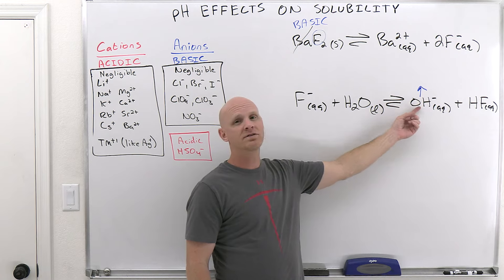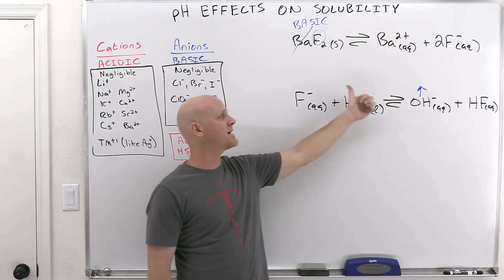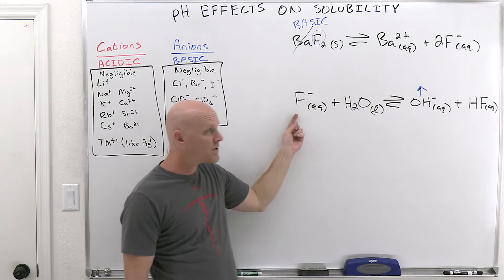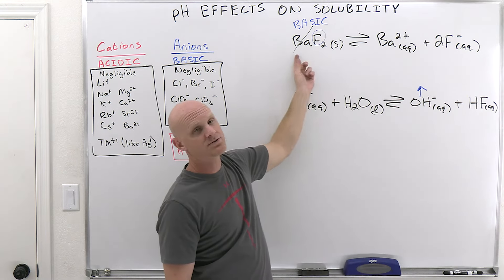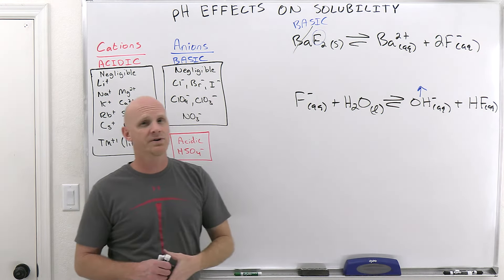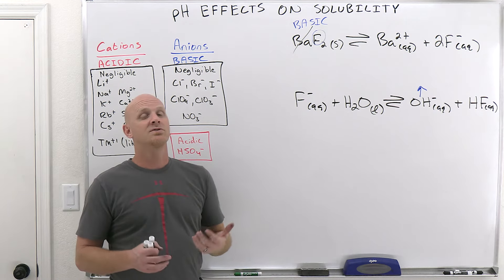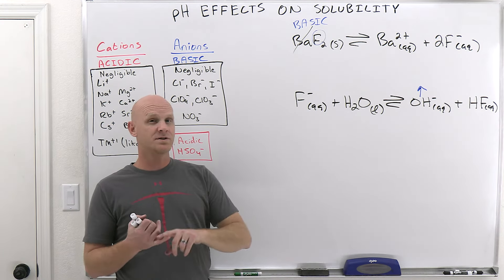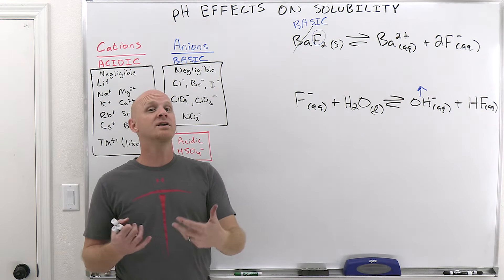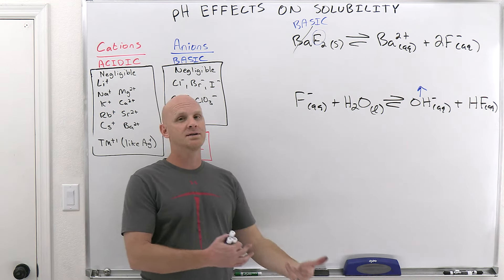Basic solutions have more hydroxide. More hydroxide is going to shift the equilibrium of the acid-base reaction here back to the left, forming more fluoride, and more fluoride is going to shift this equilibrium back towards the solid, meaning less dissolved solid in that solution. And so now you understand why basic salts are more soluble in acidic solutions, less soluble in basic solutions.